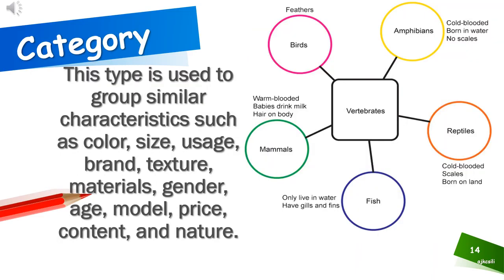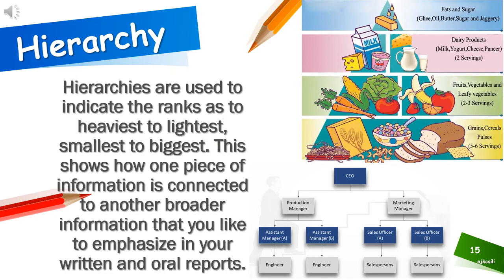Fourth, category — this type is used to group similar characteristics, such as color, size, usage, brand, texture, materials, gender, age, model, price, content, and nature. Fifth, hierarchy — hierarchies are used to indicate ranks such as heaviest to lightest or smallest to biggest. This shows how one piece of information is connected to another, and highlights the broader information you'd like to emphasize in your written and oral reports.